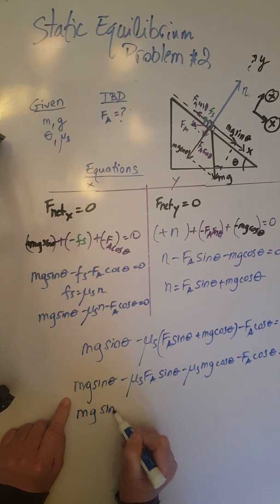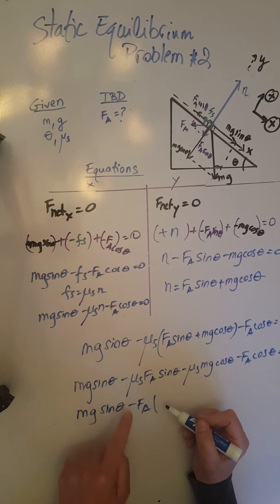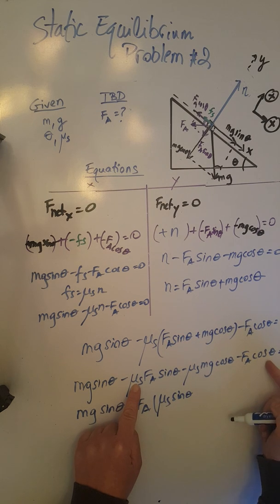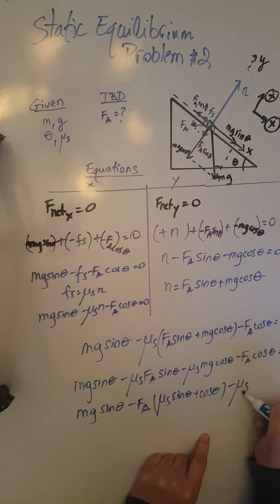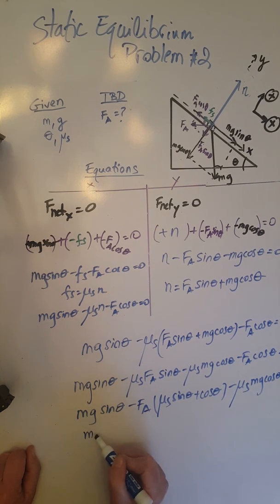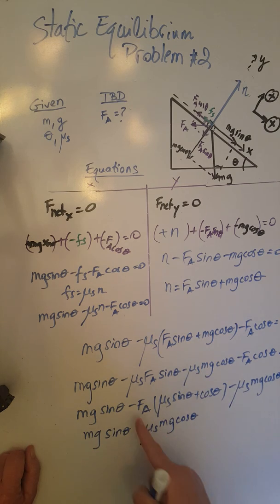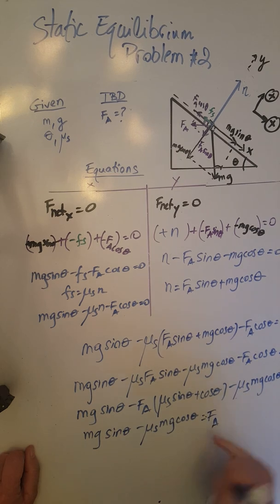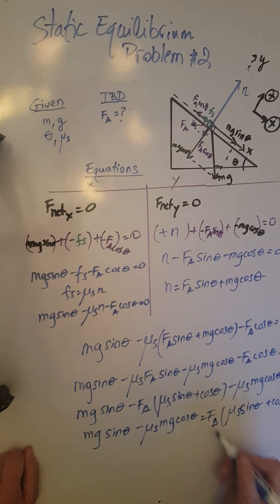We factor out negative F_a from the two terms containing it. Keeping the first term, factoring gives: mg sine theta minus F_a times (mu_s sine theta plus cosine theta) minus mu_s·mg cosine theta equals 0. Moving the F_a term to the other side makes it positive: mg sine theta minus mu_s·mg cosine theta equals F_a times (mu_s sine theta plus cosine theta). Factoring out mg on the left side gives mg(sine theta minus mu_s cosine theta) equals F_a(mu_s sine theta plus cosine theta).